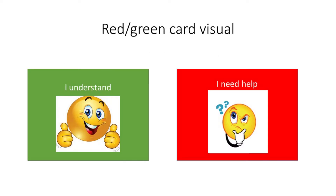Here is a simple example of support you can use with children in your classrooms to help them indicate whether they have or haven't understood. You can have these on their desk or in their tray. The green card is for them to indicate when they have understood, and the red card they can use if they haven't understood and need help — they can either place it on their table or hold it up. You can also introduce a yellow card as an in-between: if they're not sure whether they need help, you just go over and check in. These visuals are particularly useful for children who find it difficult or don't like putting their hand up to ask for help.